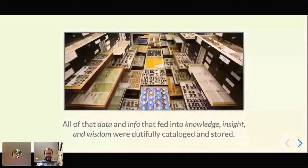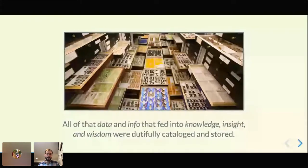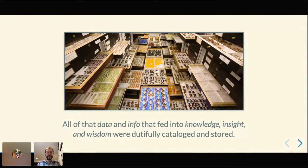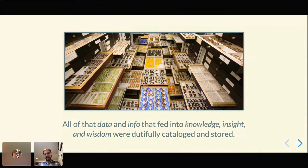All of that data and information are being cataloged and stored in drawers across the Smithsonian. This is a cool shot from the entomology department at the Natural History Museum — there are just floors and floors of racks of drawers that are closed most of the time. It really starts to hurt your brain when you try to comprehend the amount of data stored at the Smithsonian, both in the drawers and in what we're digitizing.